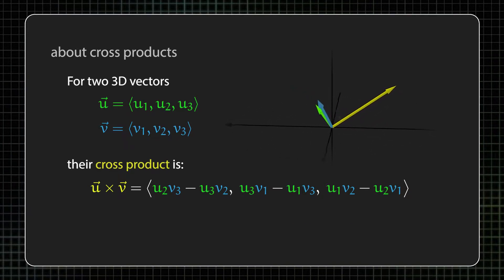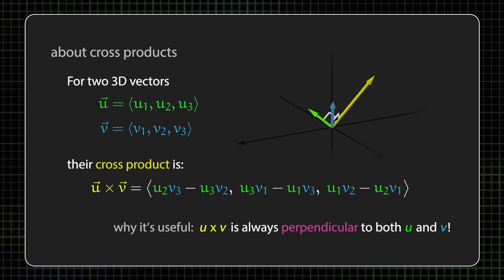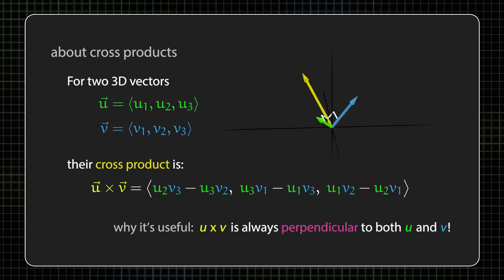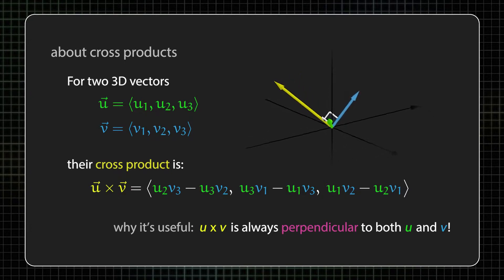We'll talk more about how to compute cross products in a second, but for now, it's worth noting that the main reason the cross product is useful is that as long as u and v aren't parallel, u cross v is a non-zero vector that's perpendicular to both u and v.